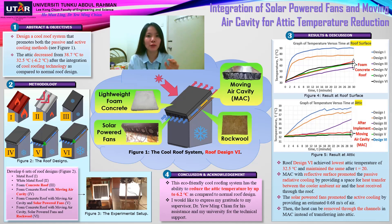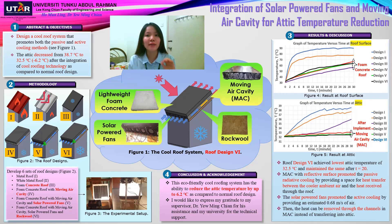The performance of each co-roof design was then recorded and evaluated after the experimental setup as shown in figure 3. As we can see from figure 3, a solar panel is used to run the fans which were placed in the moving air cavity. Moreover, two spotlight lamps were used as a heat source to heat up the roof models.